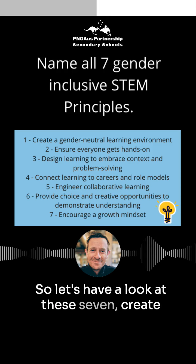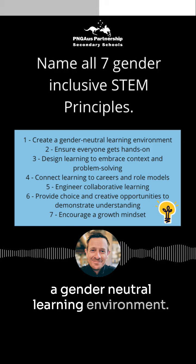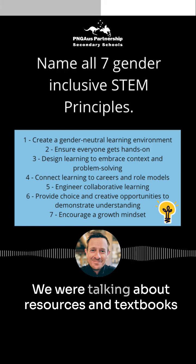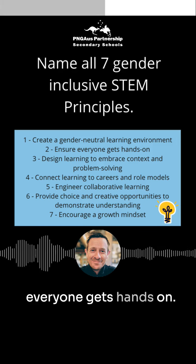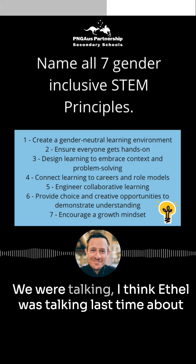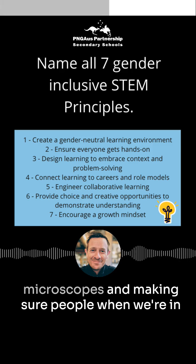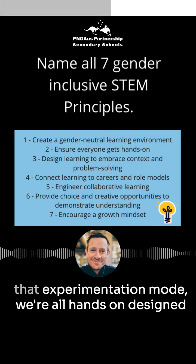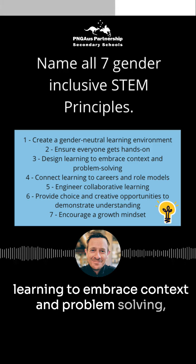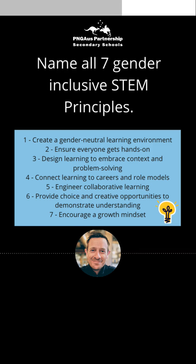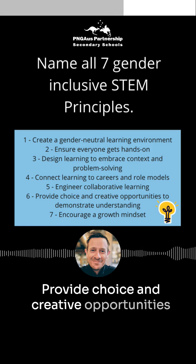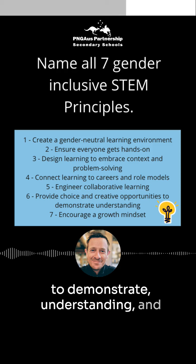So let's look at these seven: create a gender-neutral learning environment — we were talking about resources, textbooks, and posters. Ensure everyone gets hands-on — we were talking about microscopes and making sure, when we're in experimentation mode, everyone is hands-on. Design learning to embrace context and problem solving. Connect learning to careers and role models. Engineer collaborative learning. Provide choice and creative opportunities to demonstrate understanding. And encourage a growth mindset.